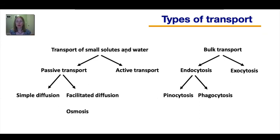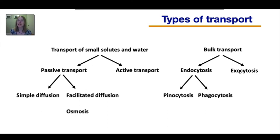This is the end of the lesson. To summarize: you first learned about the transport of small solutes and water through two types of passive transport, then active transport, and finally two different forms of bulk transport — endocytosis versus exocytosis — both of which use vesicles. That's the end of the lesson.